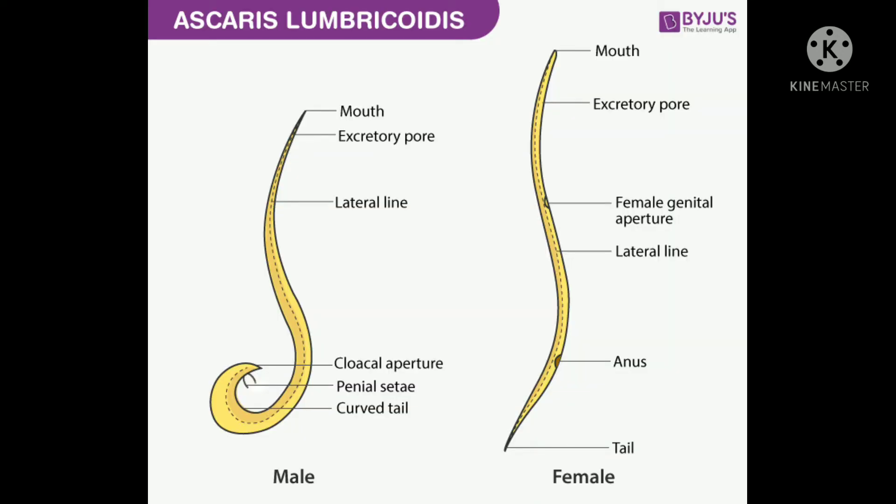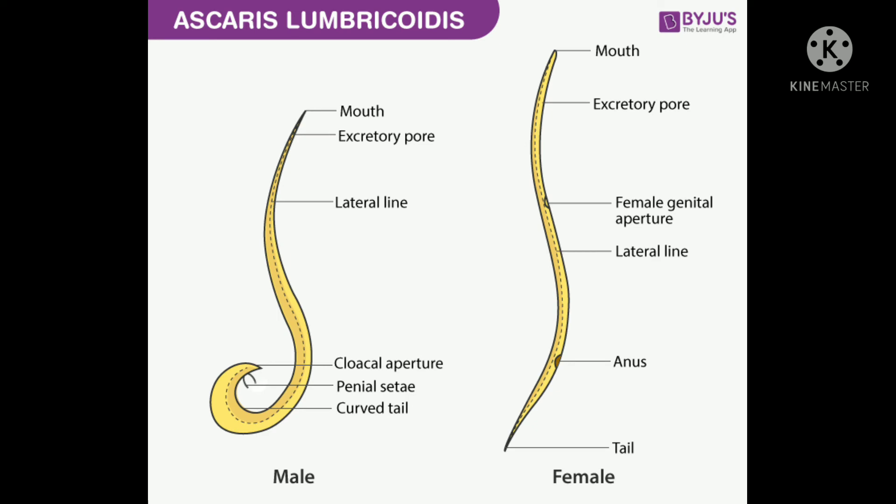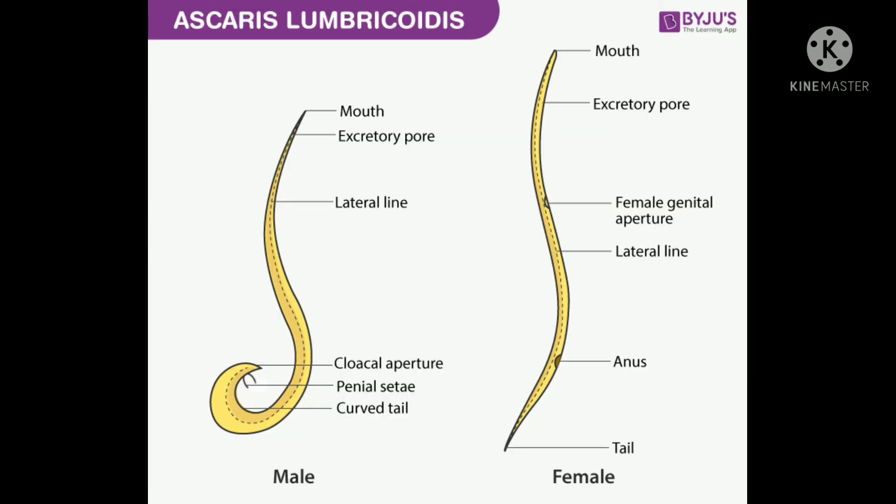Phylum Aschelminthes is also known as Nematoda. The nematode body is bilaterally symmetrical and triploblastic. However, the body is cylindrical rather than flattened. There are tissues but no real organs, although a sort of body cavity — a pseudocoelom — is present.